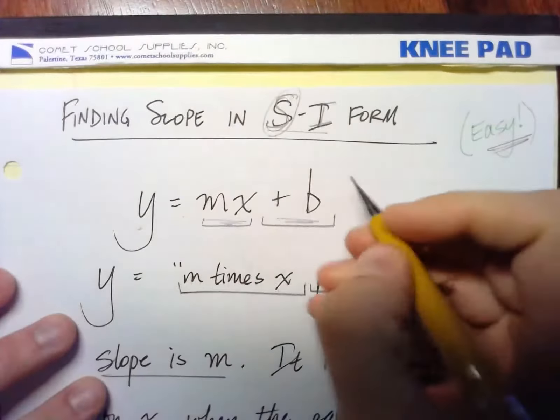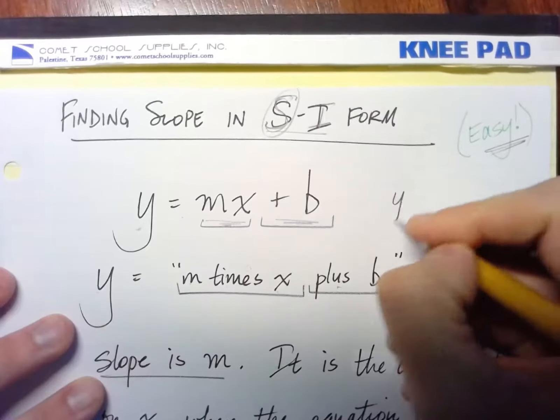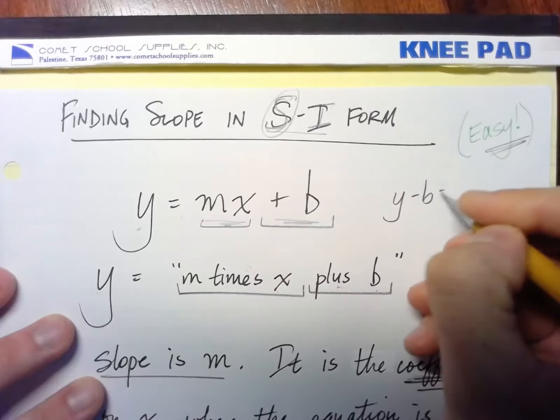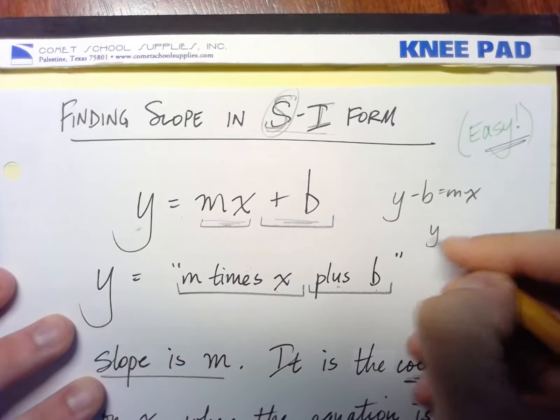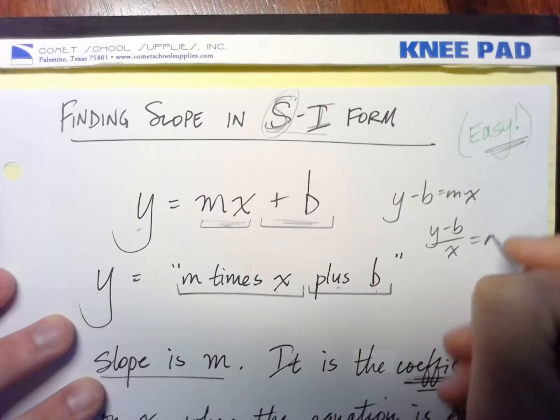I mean, I could also come in here and I could rearrange this and I could say, okay, if I subtract b from both sides, then I would get that. If I divide everything by x, then I can get y minus b over x equals the slope.